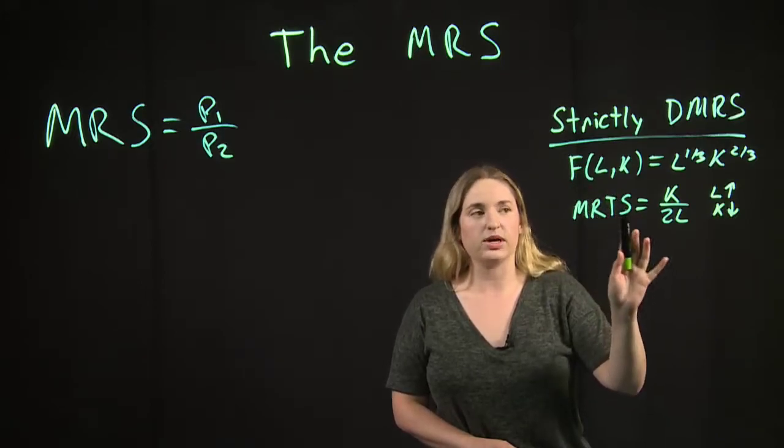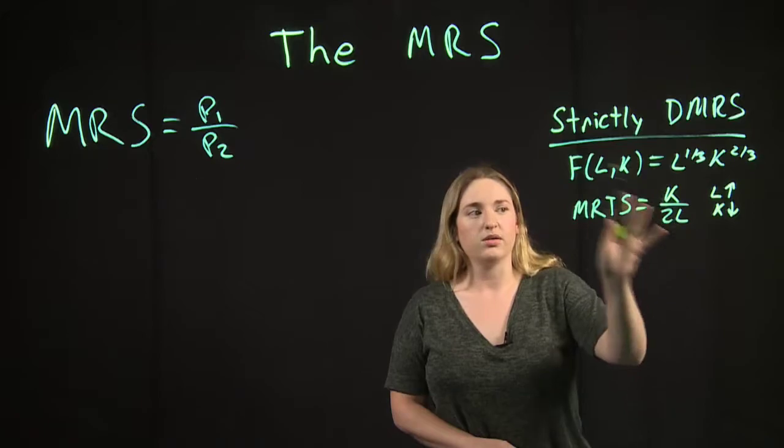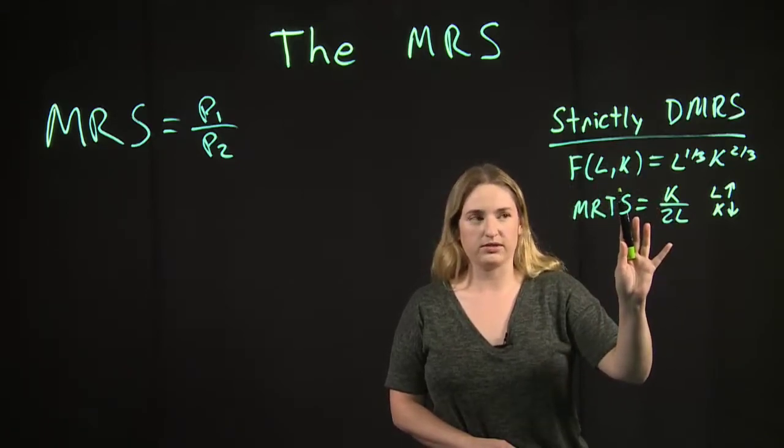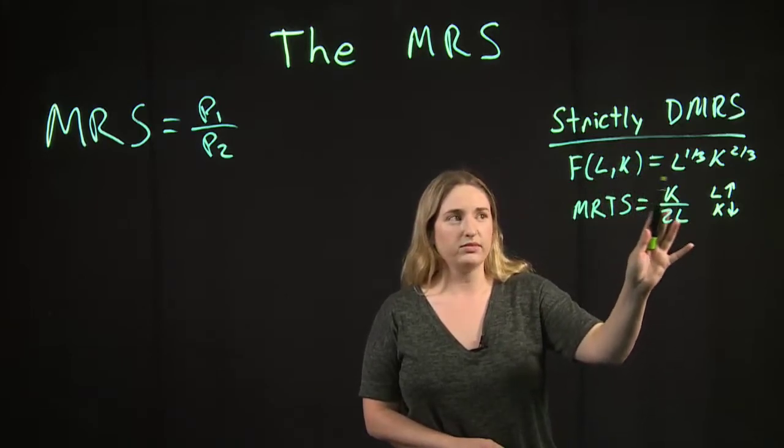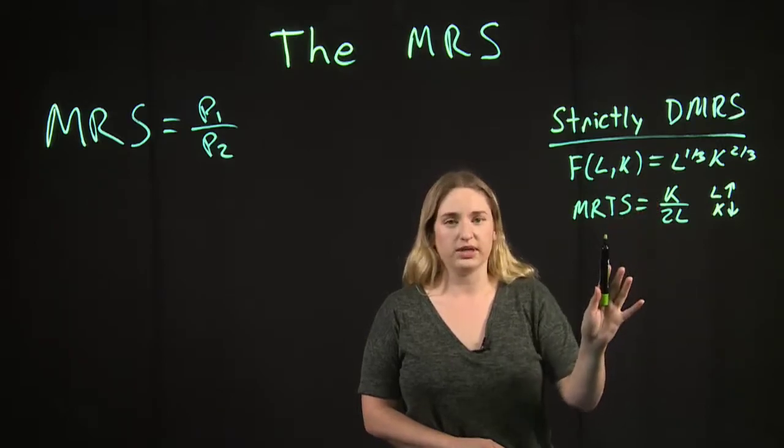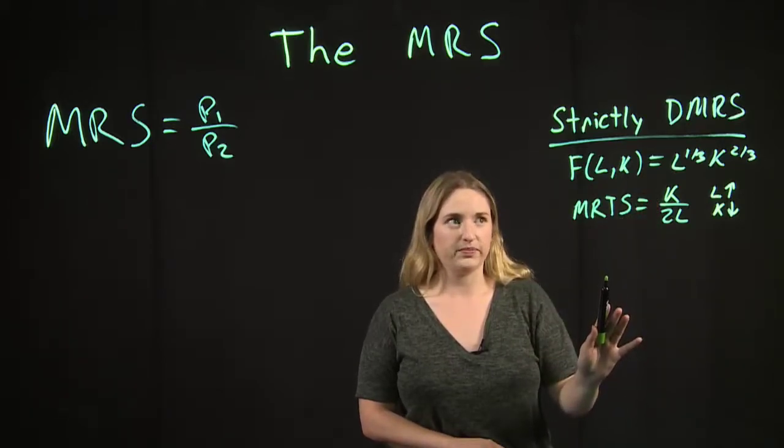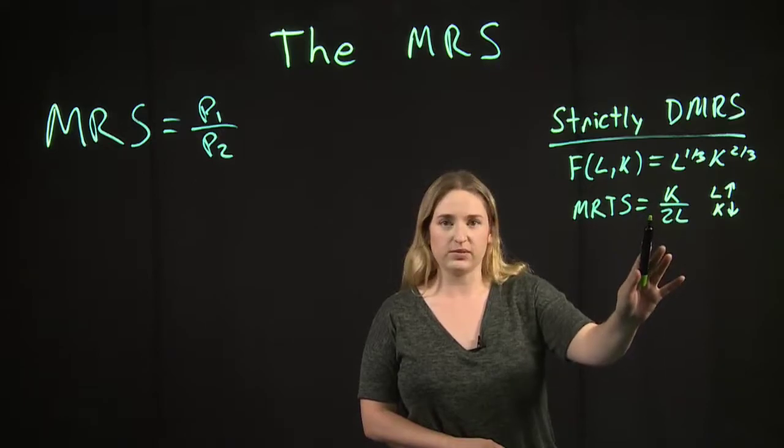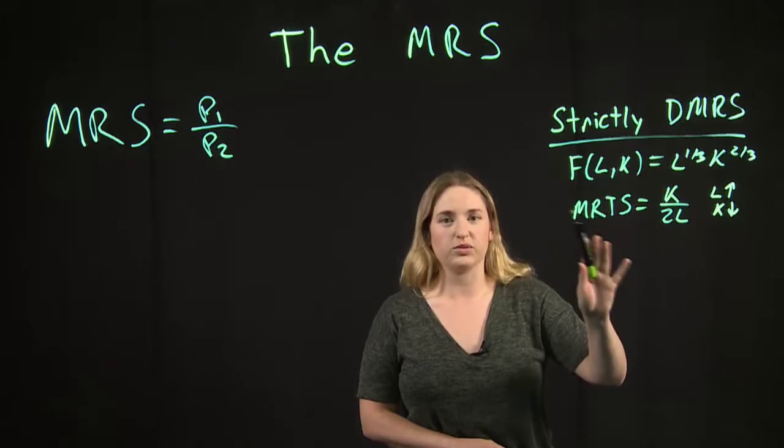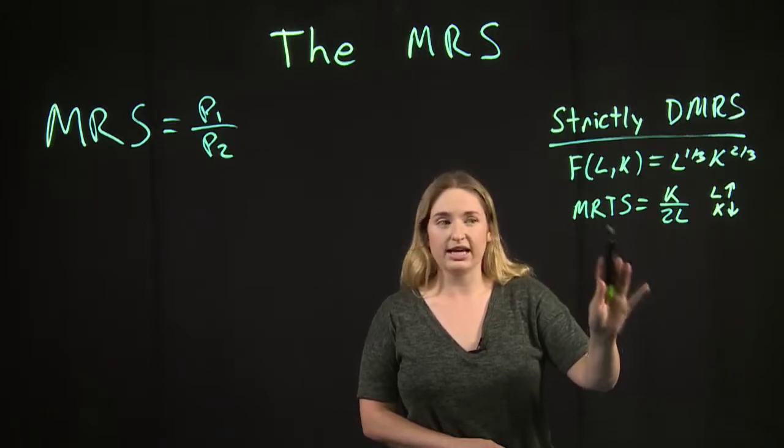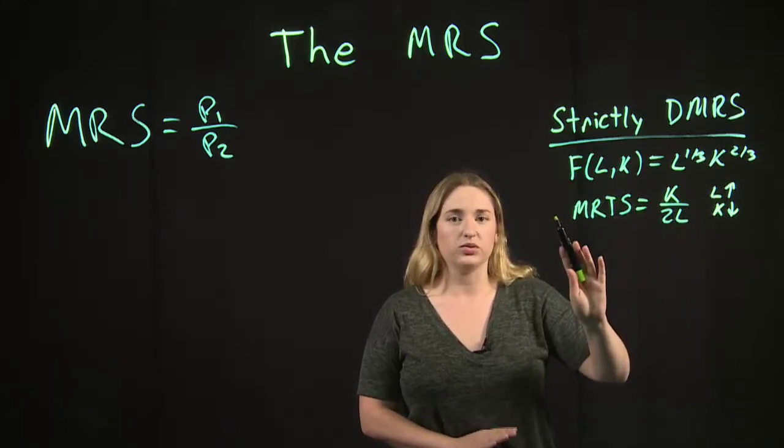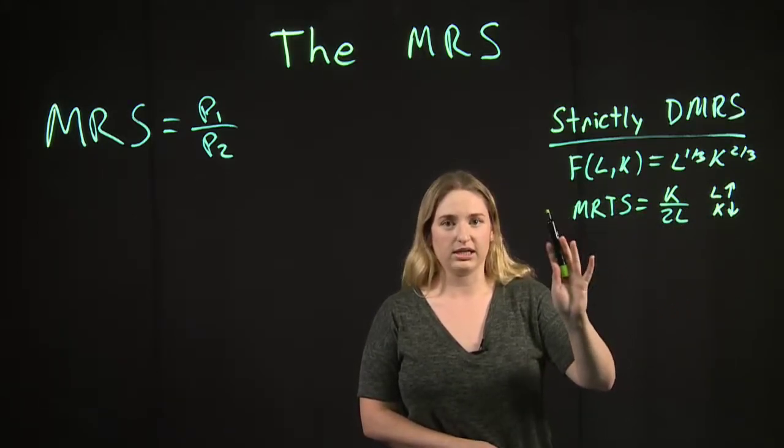And an interior optimum is where you would be purchasing, for example, both inputs. You would be buying positive amounts of capital and positive amounts of labor. If this were a utility problem, if we had a strictly diminishing marginal rate of substitution you would be consuming positive amounts of good one and good two. So when it's a strictly diminishing marginal rate of substitution you are guaranteed that interior solution with positive amounts of both goods. In that case you can set the MRS or MRTS equal to a price ratio and you will definitely have the unique interior solution.